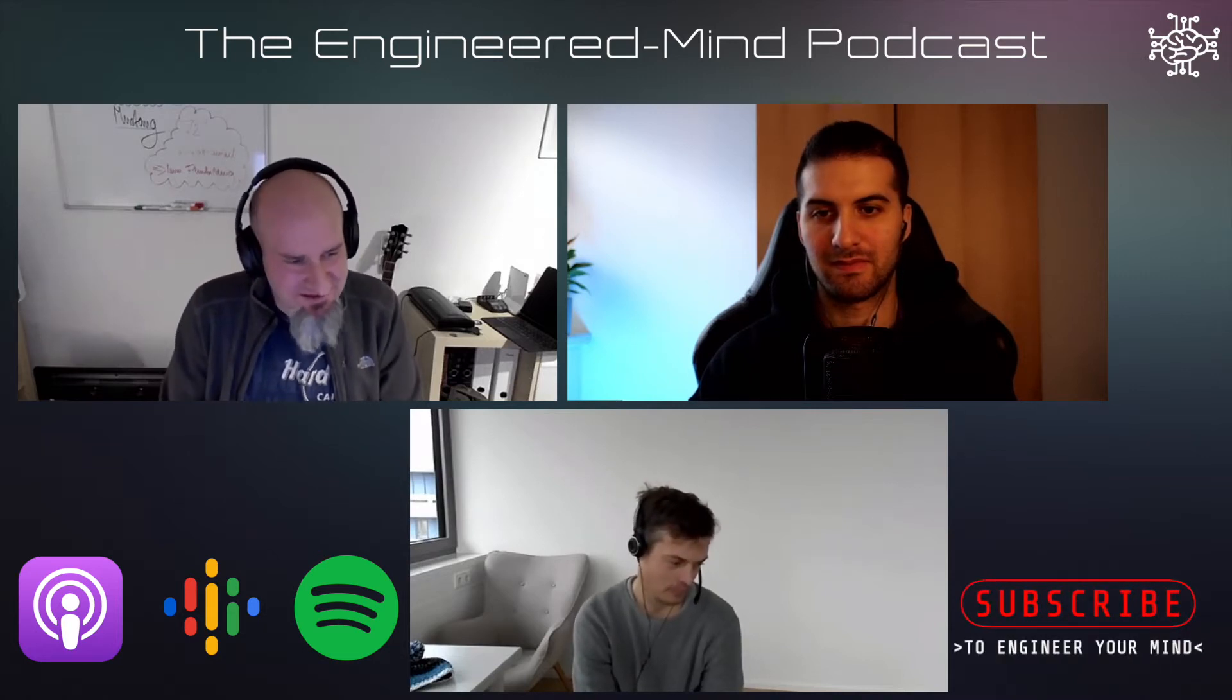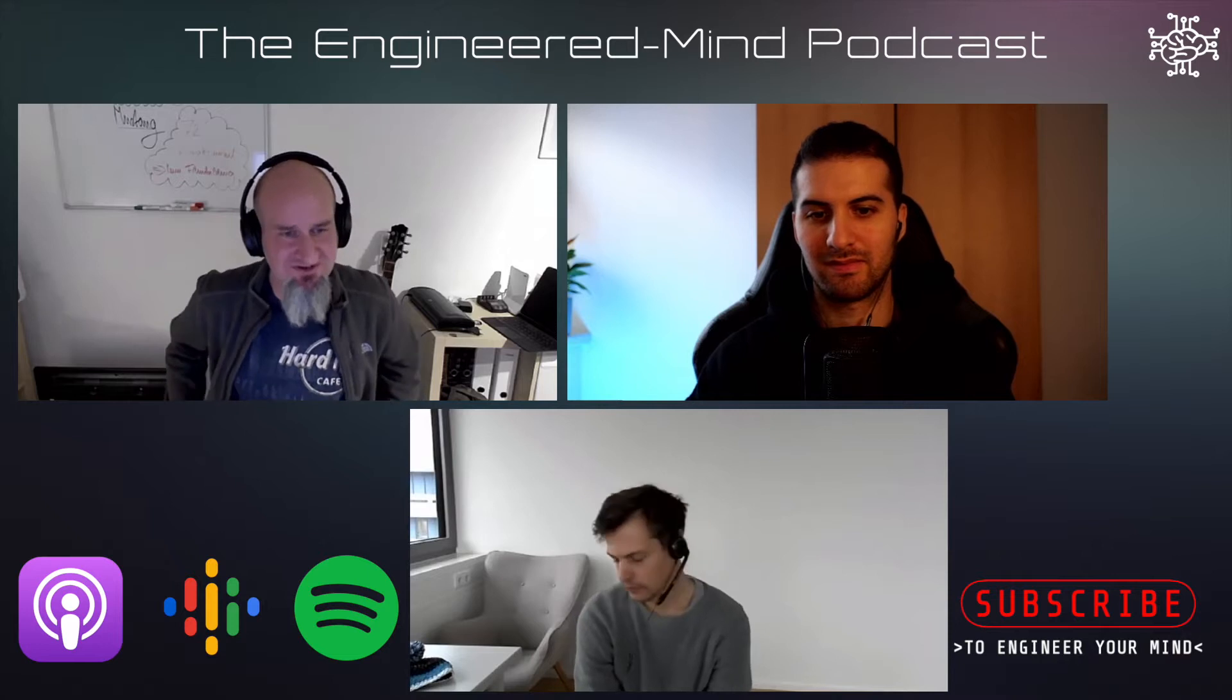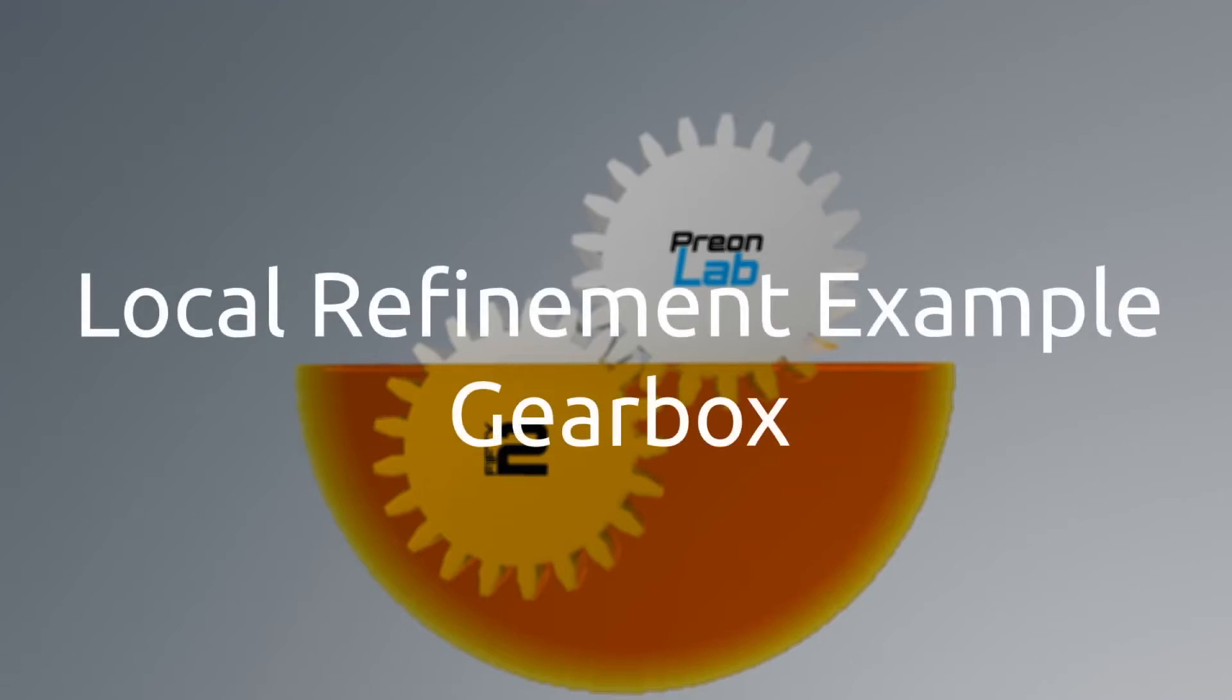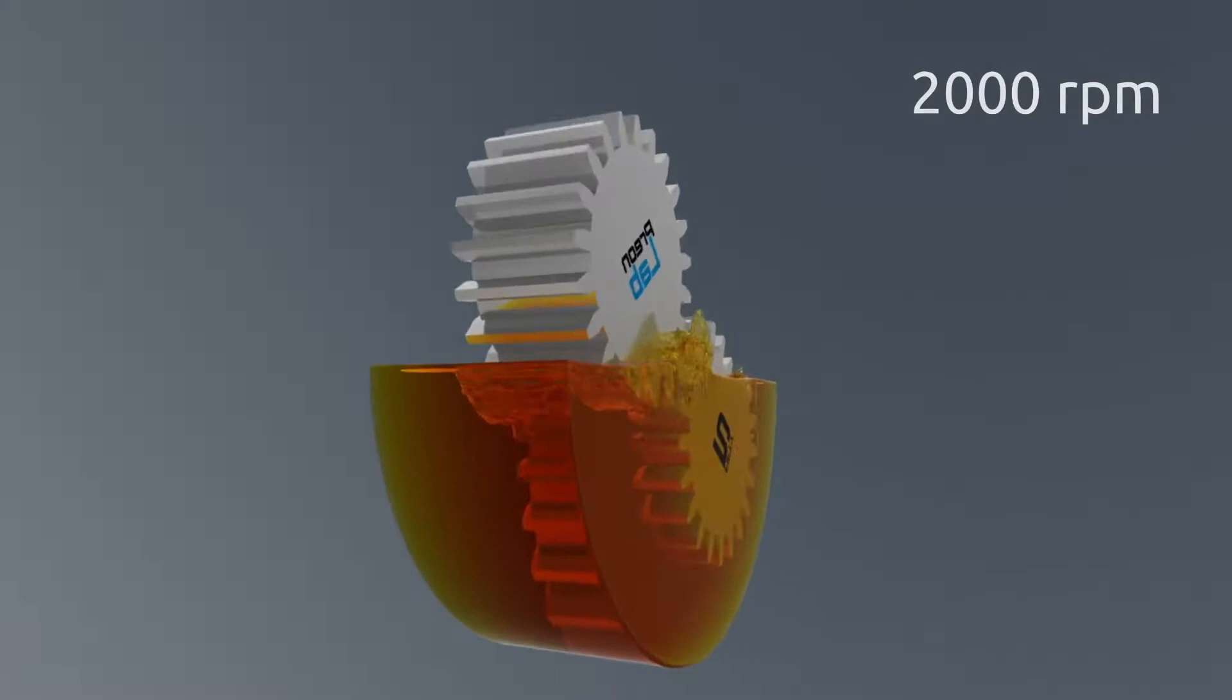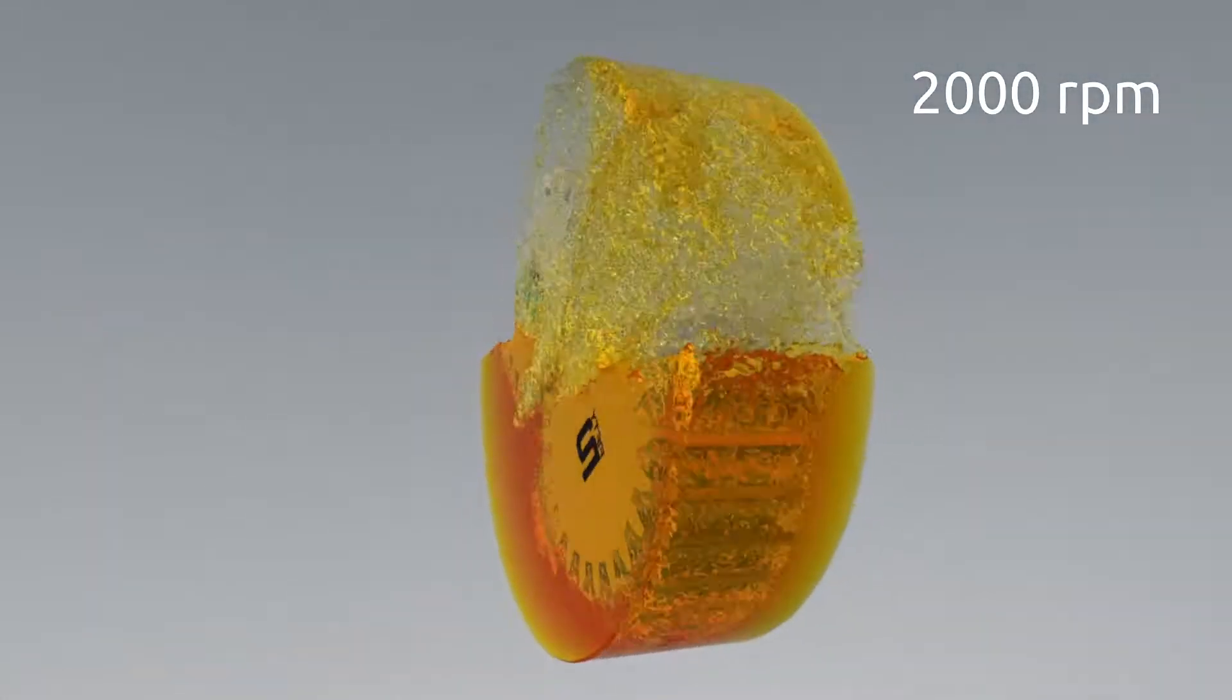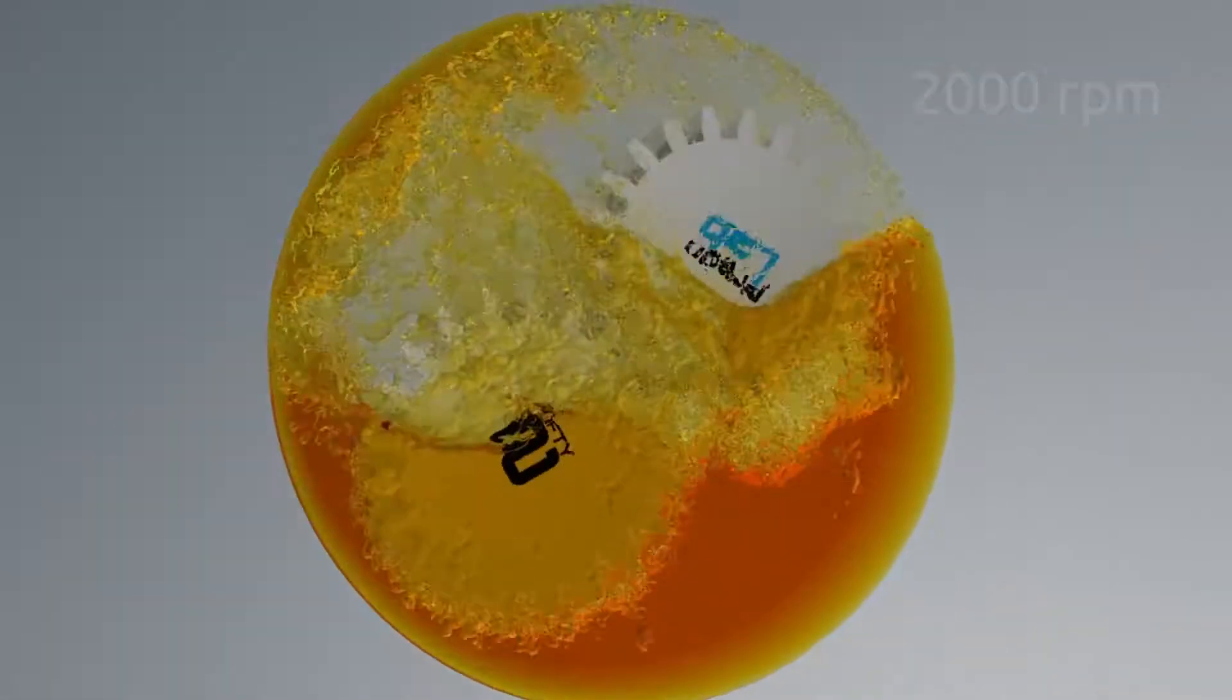SPH stems from the 70s and it was originally developed for the field of astrophysics, to get information about how, for example, the flow of mass or airflow mass on Mars is happening.